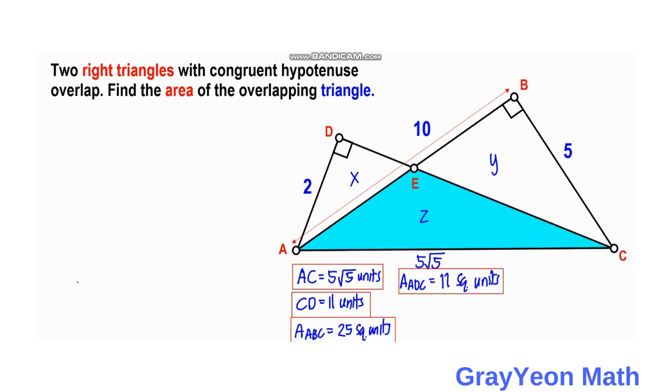Next we write equations about the area of the portions of this figure. If we focus first on the area of ADC, we have that ADC is composed of regions X and Z. So X plus Z equals the area of ADC, which is 11.